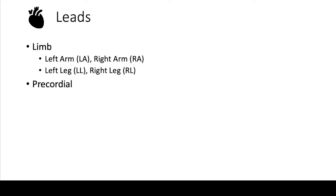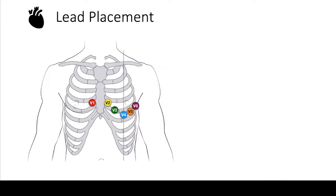The precordial leads are the ones that get a little bit tricky. The precordial leads are V1 through V6. Depending on what hospital you'll be working in or the acuity of the situation, you might have to place the leads yourself. There's usually a schematic on the EKG machine that tells you where to place them, but it's good to know anatomically where these leads go.